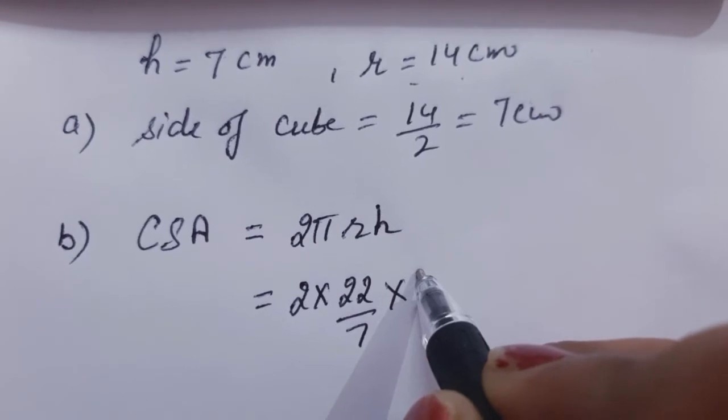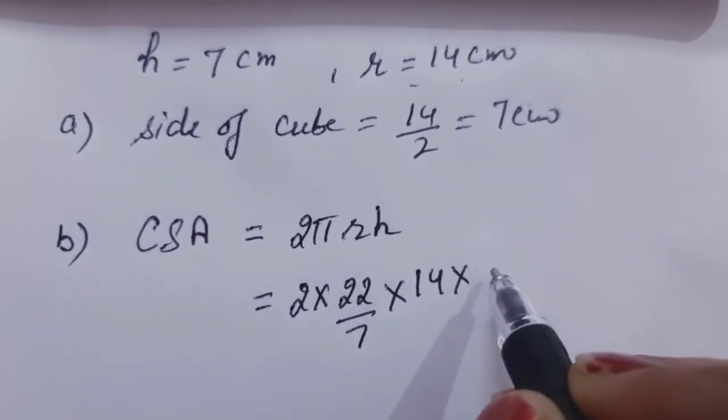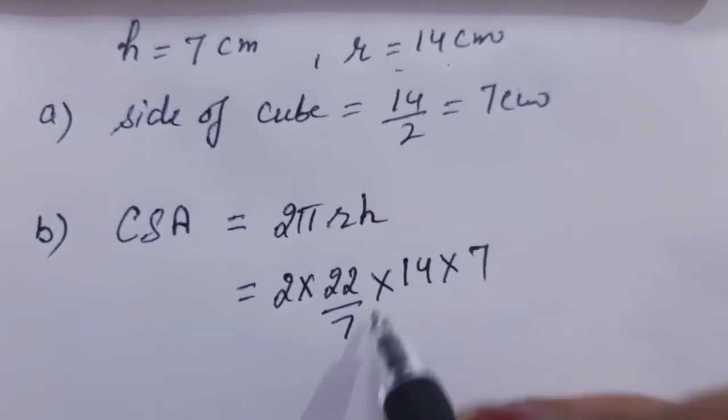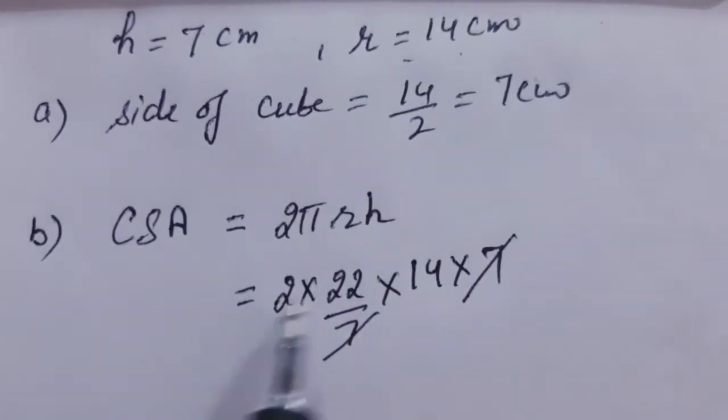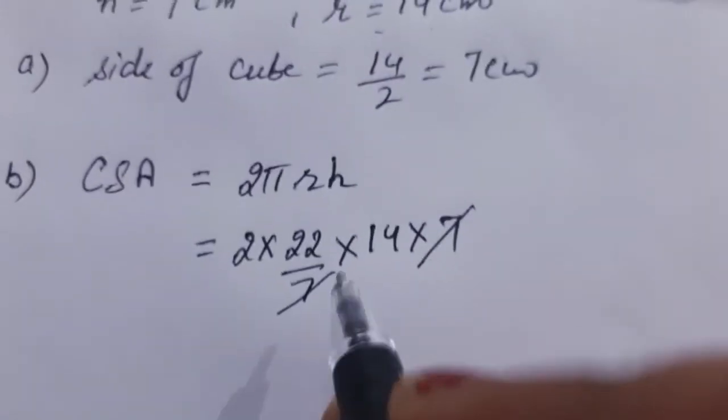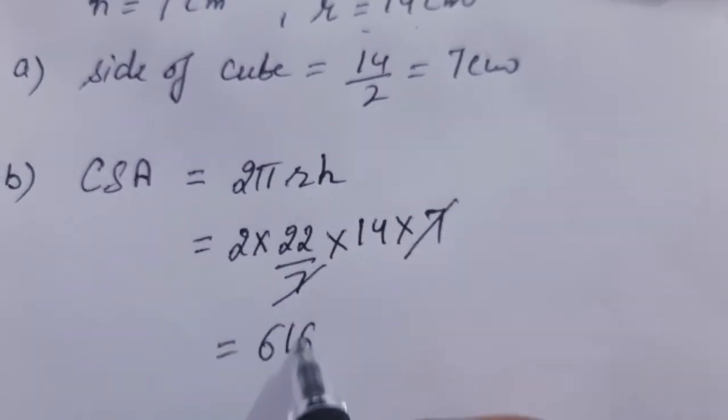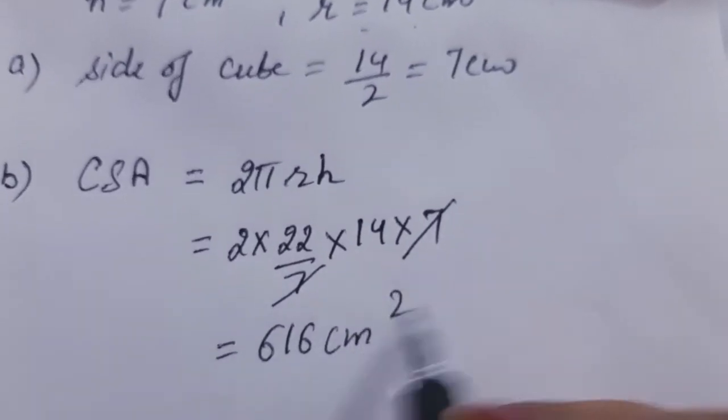r is 14 and h is 7. The 7 will cancel out with 7, and then we multiply the numerators. It comes out to be 616 centimeter square.